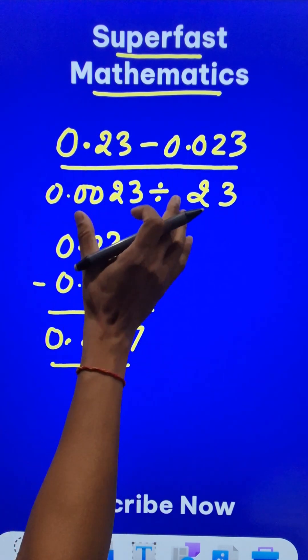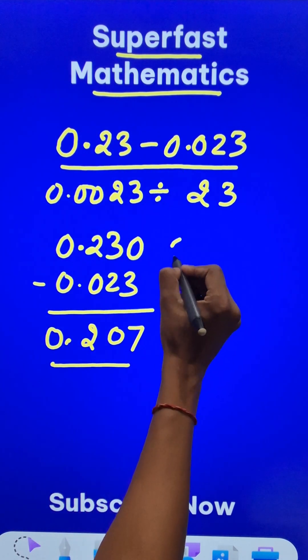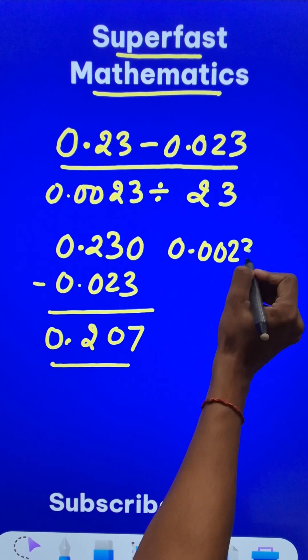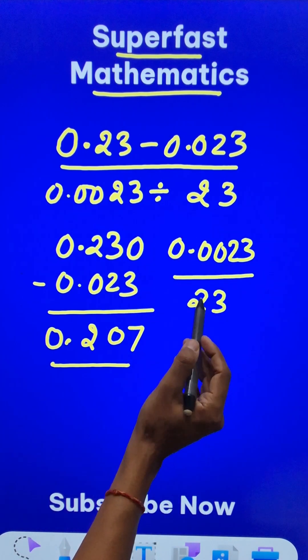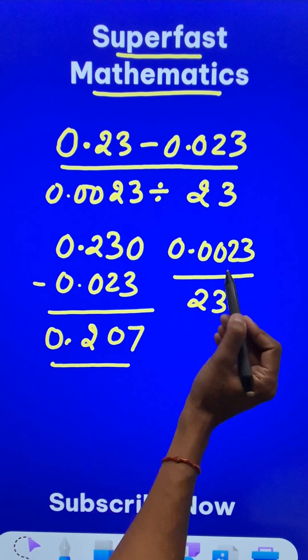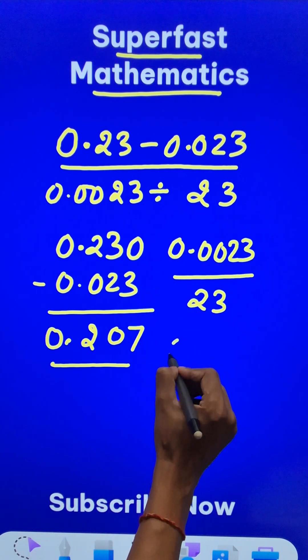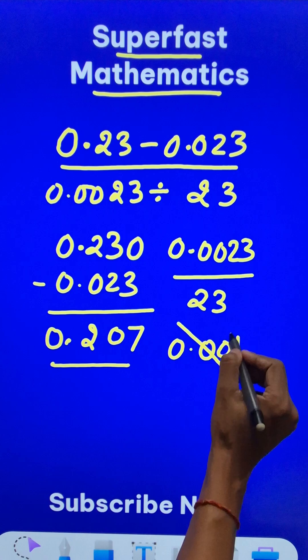But the denominator, this is where most students will commit an error. 0.0023 divided by 23. So many students will think that 0.0023 cancels with 23 to give 1, but that is where the error is.